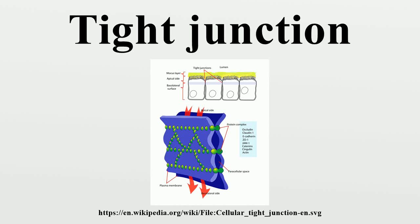Tight junctions, also known as occluding junctions or zonuli occludentes, are the closely associated areas of two cells whose membranes join together forming a virtually impermeable barrier to fluid.